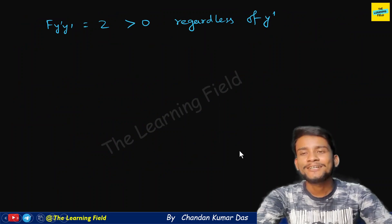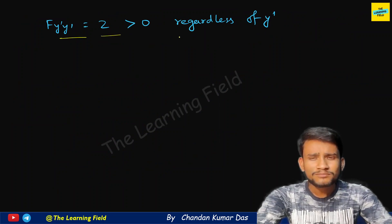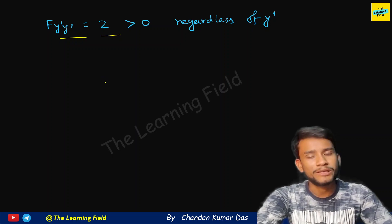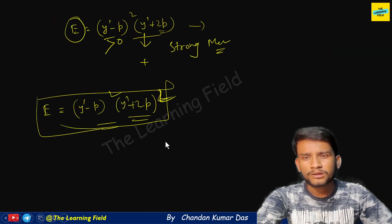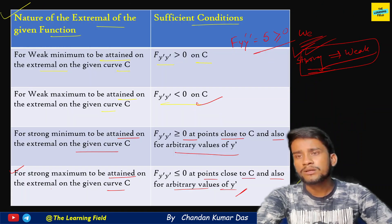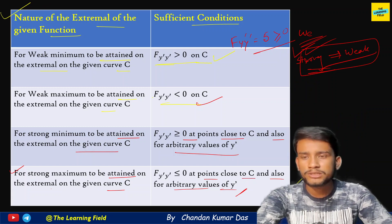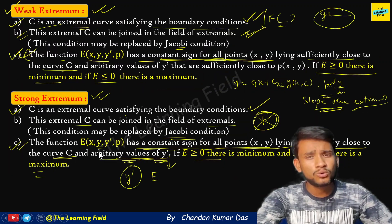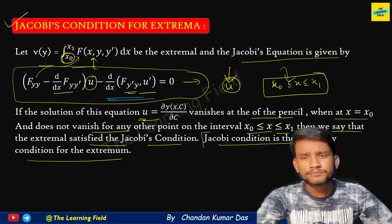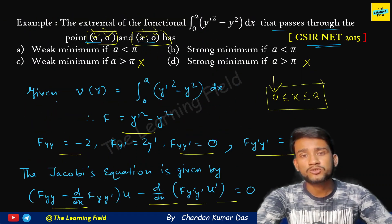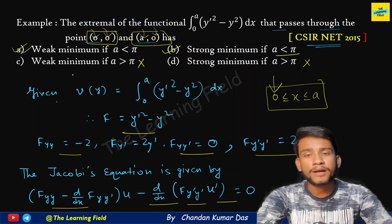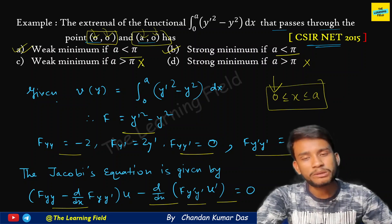Applying the Legendre condition: F_y'y' = 2, which is greater than zero and has no dependence on y'. According to the table of conditions for weak and strong minima — for a strong minimum we require F_y'y' ≥ 0 at all points close to the extremal and for arbitrary values of y'. Since there is no y' dependence here, we can say that in the interval 0 ≤ a < π, both a strong minimum and a weak minimum exist.